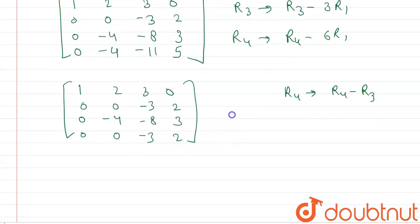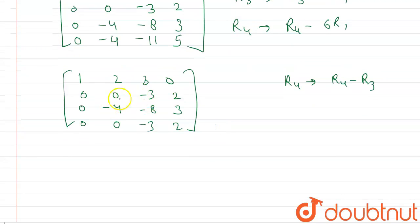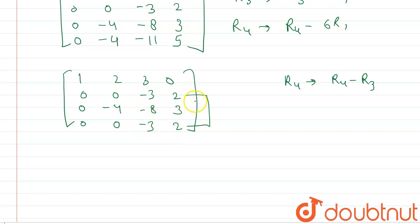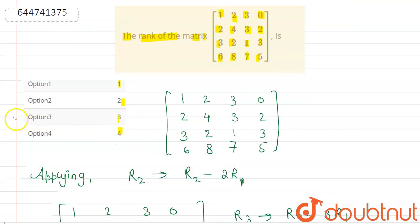Now we find the rank. Rank is the maximum number of linearly independent rows. We see that row 2 and row 4 are the same, so when we subtract one from the other we get a zero row — these two count as one. We find three linearly independent rows in total, so the rank is 3. Therefore option 3 is the correct answer.